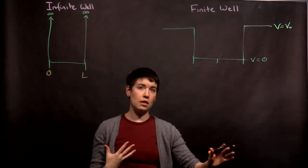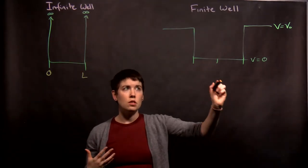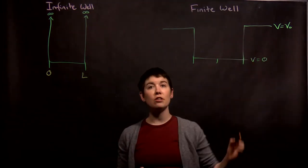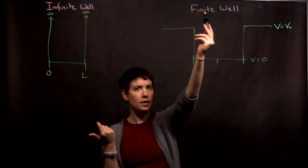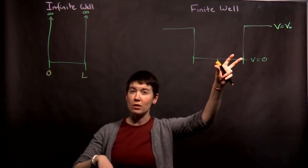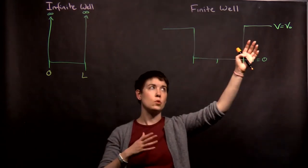Now for the finite well, the difference is that it's zero in one place, and then there's some fixed value that is finite everywhere else. And so for simplicity we're starting with something symmetric, so the value on the left is the same as the right.